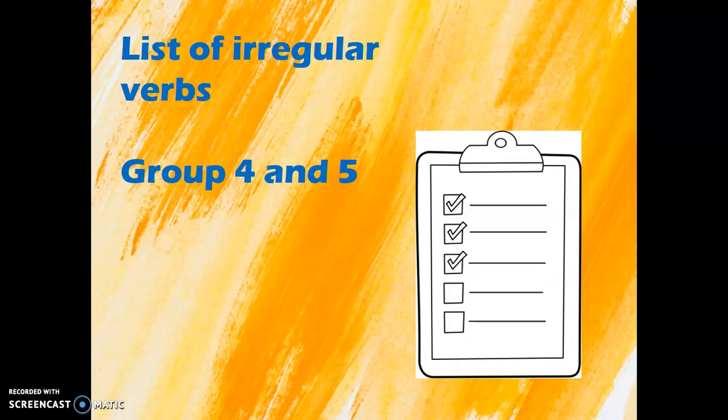And well, that was everything for today. Let's go on to the list of irregular verbs groups 4 and 5 in the next video. See you later.